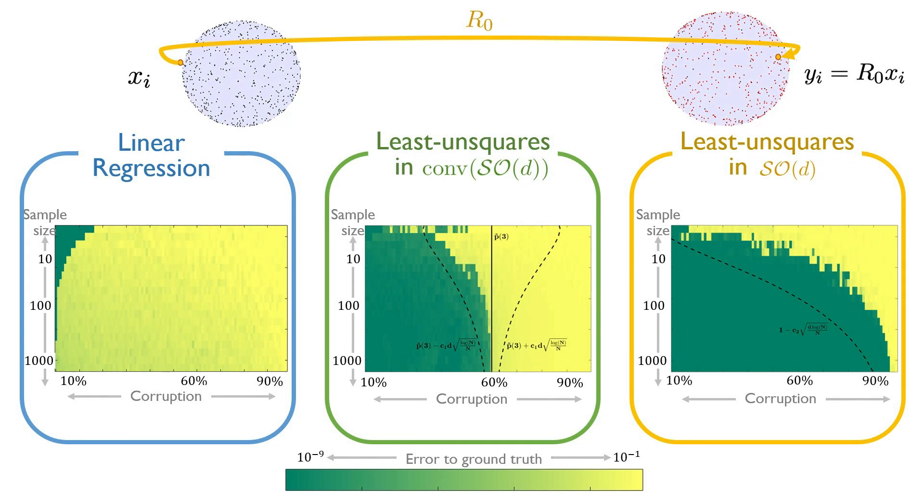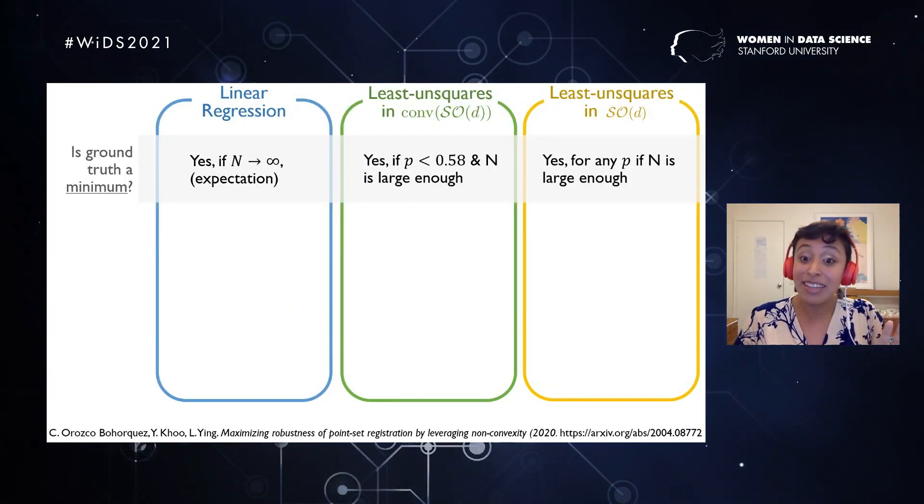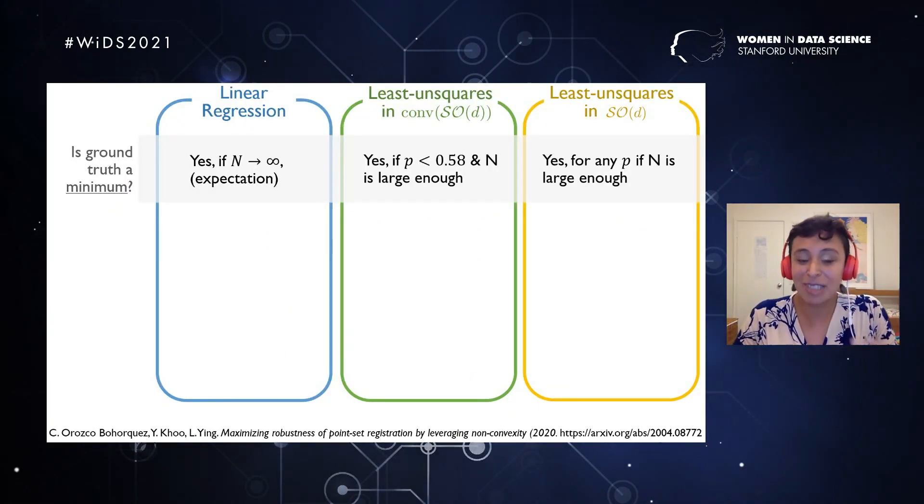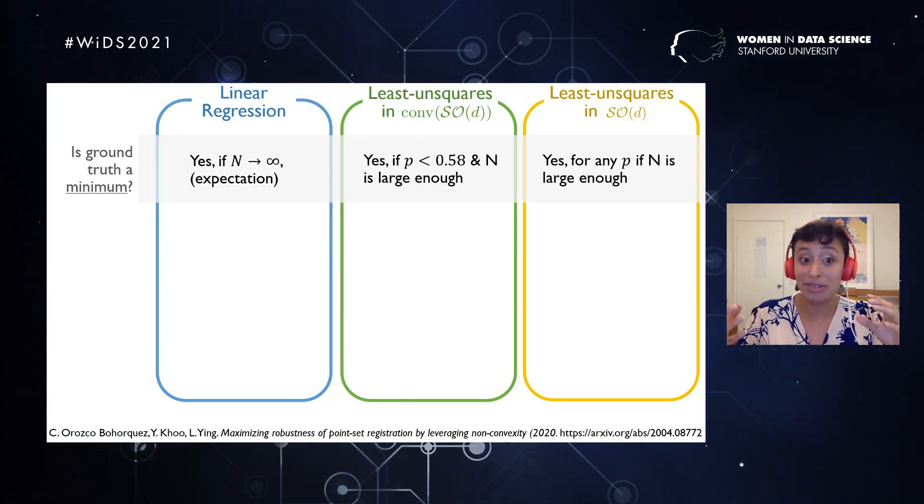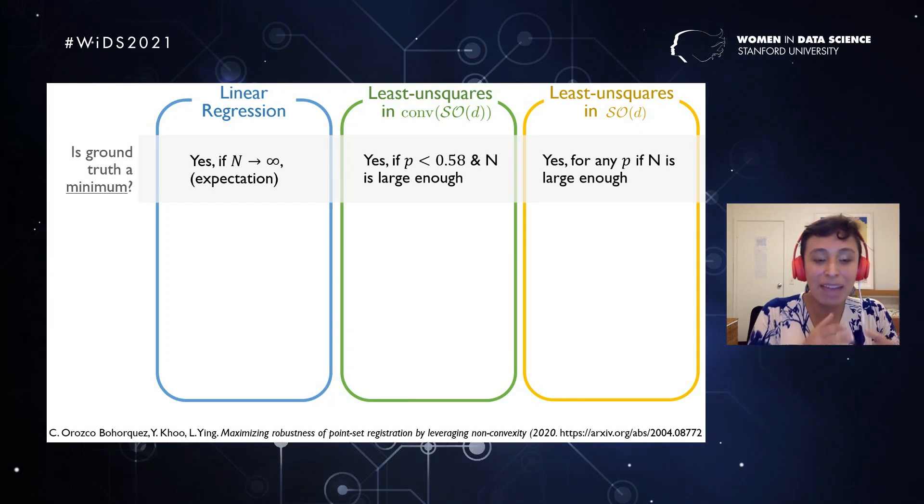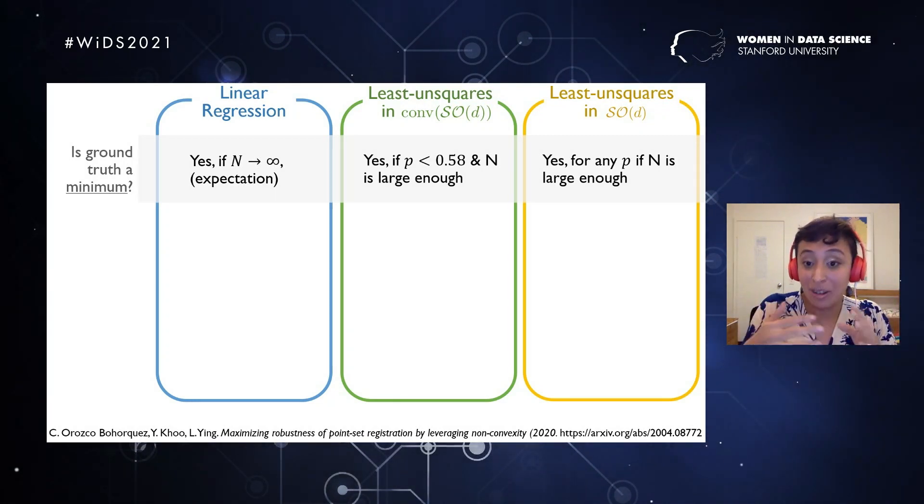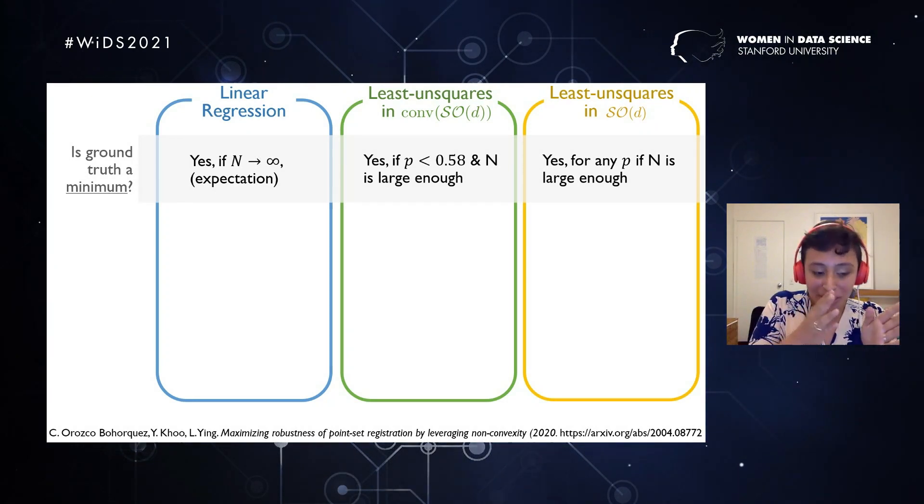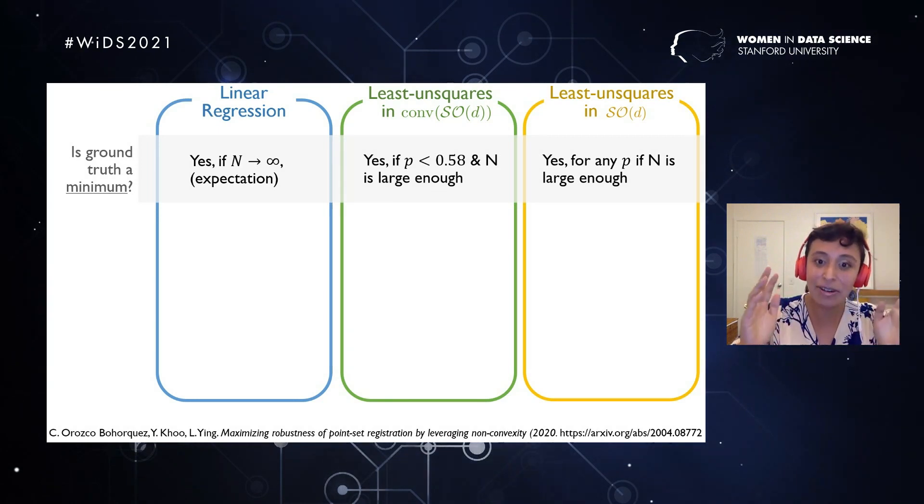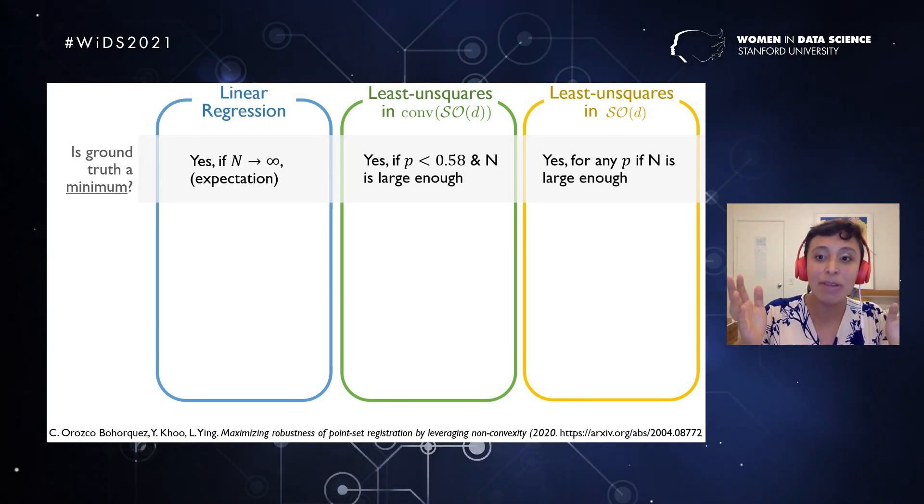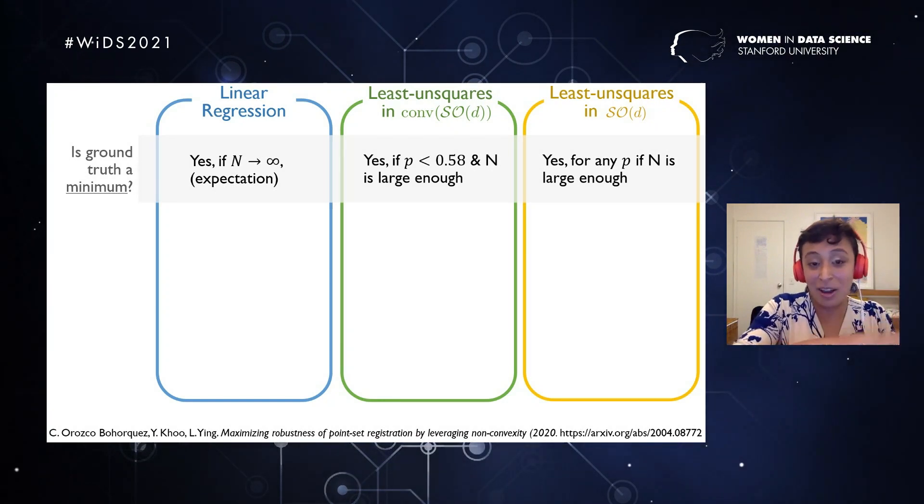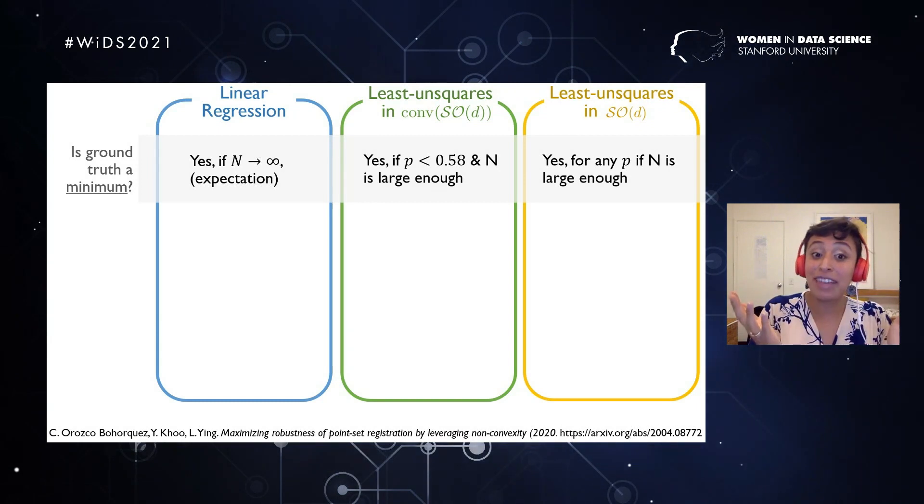The big question is, can we explain this with theory? And the truth is, yes, we can. So how do we go about explaining these things with theory? So first we need to make sure that the loss function that we propose is going to recover our ground truth. In the case of linear regression, that only happens when we have an infinite sample size, and that means when we can prove it in expectation. But in reality we don't have an infinite sample size, we have a finite sample size. And in there, only least unsquared loss works. And when we are solving it for a rotation, it works for any corruption if we have a large enough sample size. But when we are solving it in an easier domain, in the convex hull, there is this threshold of 0.58. If the corruption is above that model, it doesn't work.